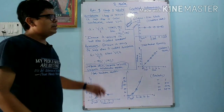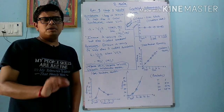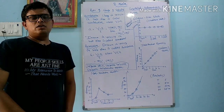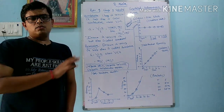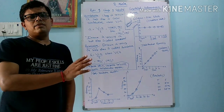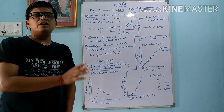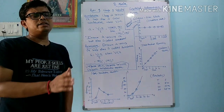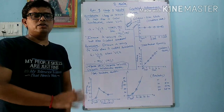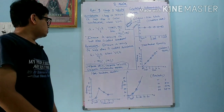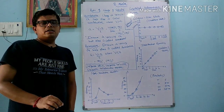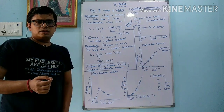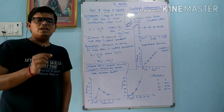The next quantity is called retardation. The negative of acceleration is called retardation. So increase in velocity is called acceleration and decrease in velocity is called retardation. Decrease in velocity in unit time is called retardation. In retardation, the final velocity is less than the initial velocity, so v is less than u.